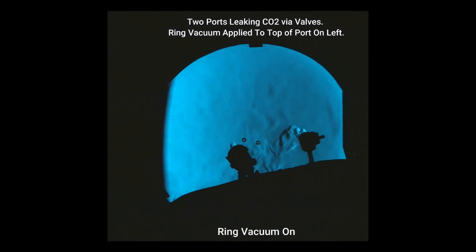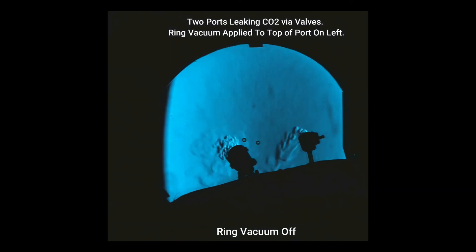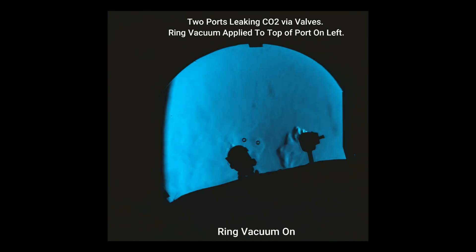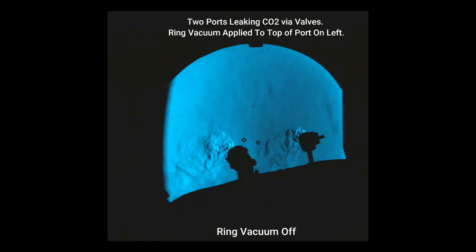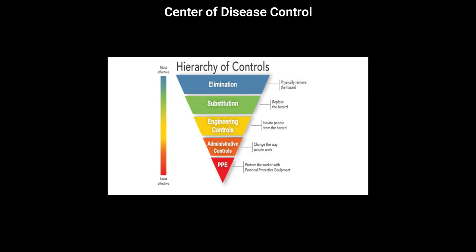Here you can see that a gas leak occurring via disrupted valves on the trochar on the left is being intermittently managed by switching on and off a ring vacuum at the top of this trochar, in comparison to the unmanaged similar leak from the trochar on the right. The Centers for Disease Control in the US adopts a hierarchy of controls pyramid framework when considering exposures to occupational hazards.